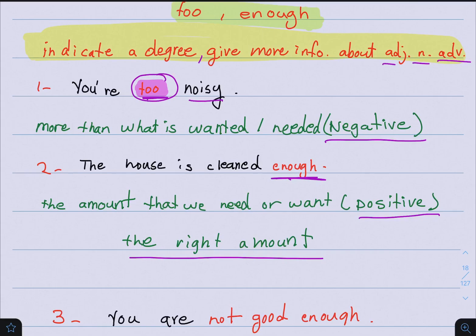As for 'too,' let's take a look at this example: You are too noisy. 'Too' means you have more than what is wanted or needed. Usually it carries a negative meaning. For example: You are too noisy — this implies a negative situation.